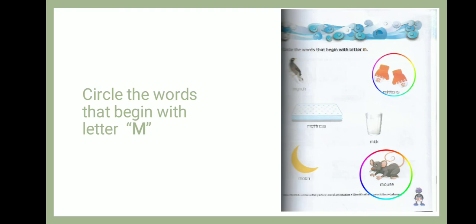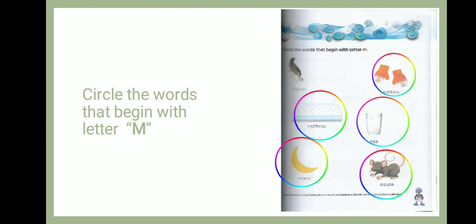Next is mitten. Mitten starts with letter M, so we circle the mitten. Now third is moon. Moon starts with which letter? Yes, it starts with letter M, so we circle the moon. Now mattress — mattress starts with letter M, so we circle the mattress. Now milk — milk also starts with letter M, so we circle the milk.